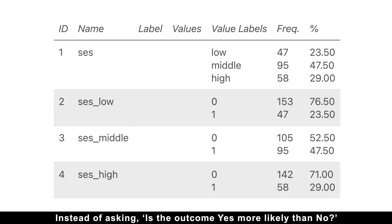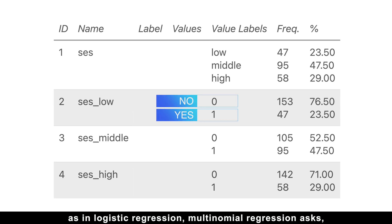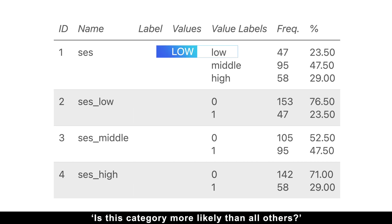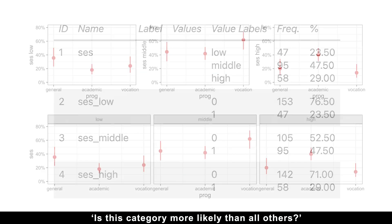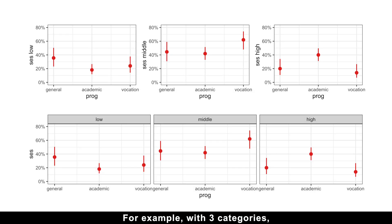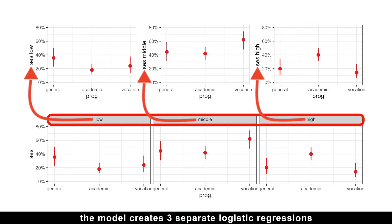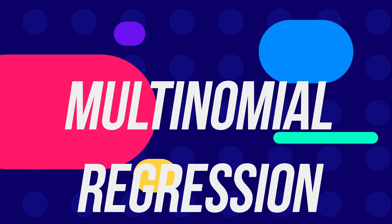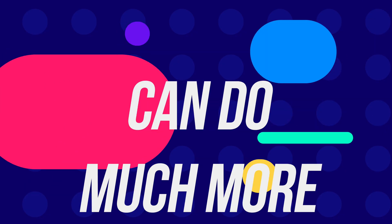Instead of asking 'is the outcome yes more likely than no?' as in logistic regression, multinomial regression asks 'is this category more likely than all others?' For example, with three categories the model creates three separate logistic regressions, but multinomial regression can do much more.